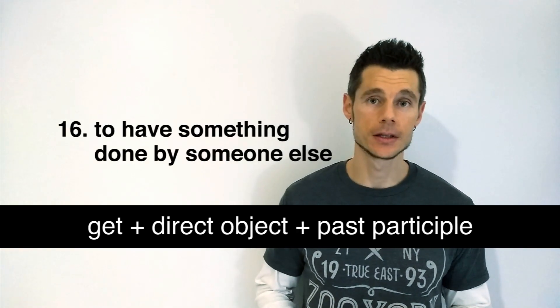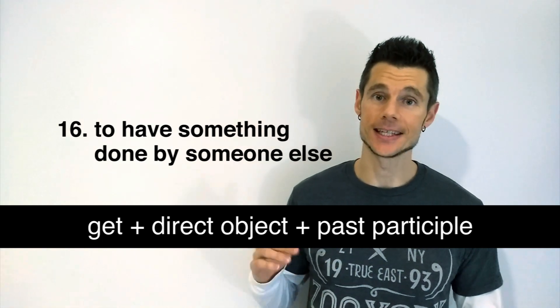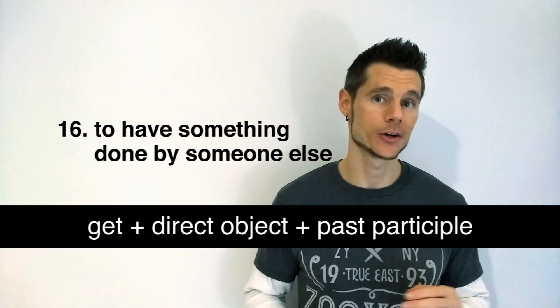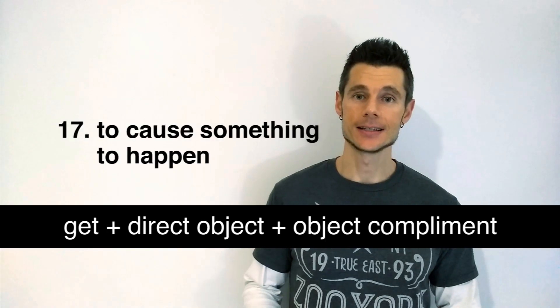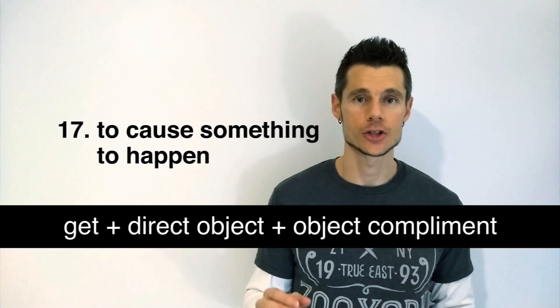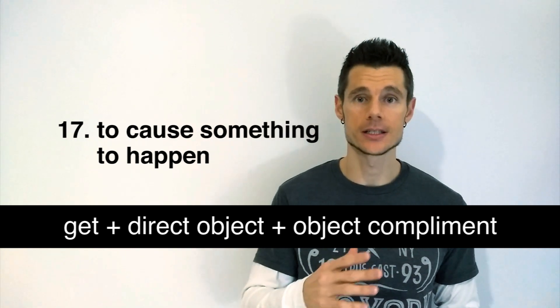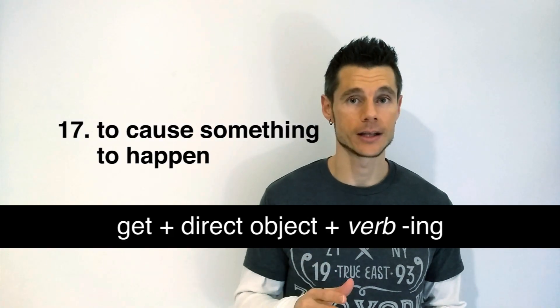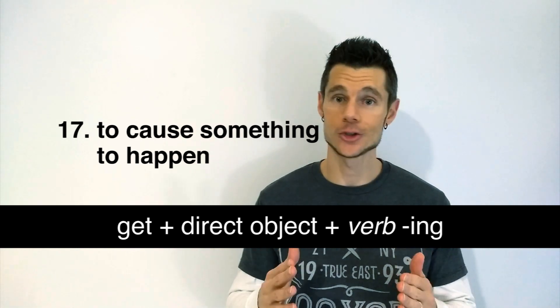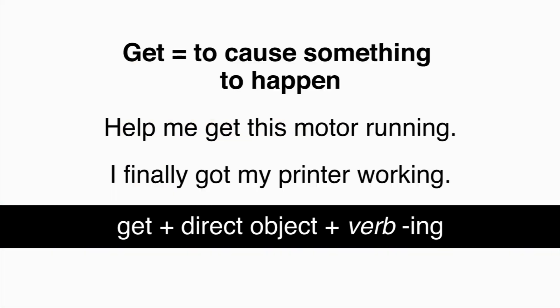GET can mean to have something done by someone else. The structure used is GET plus direct object plus past participle. I need to get this computer fixed. Don't get your hair cut at the mall. GET can mean to cause something to happen. The structure is GET plus direct object plus object complement. We're getting the order ready for shipping. He gets the job done every time. The structure GET plus direct object plus verb-ing can also be used: help me get this motor running. I finally got my printer working.